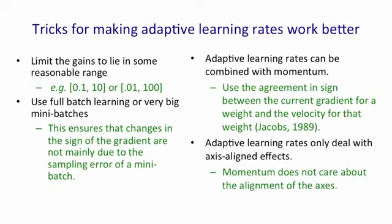So adaptive learning rates only deal with axis-aligned effects, whereas momentum doesn't care about the alignment of the axes. Momentum can deal with these diagonal ellipses and going in that diagonal direction quickly, which adaptive learning rates can't do.